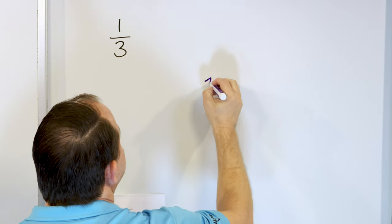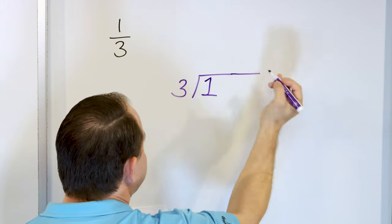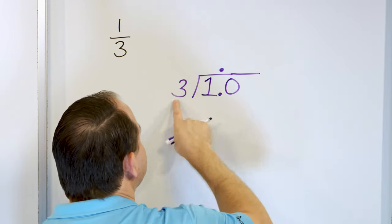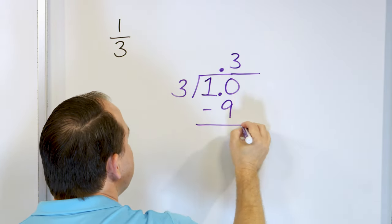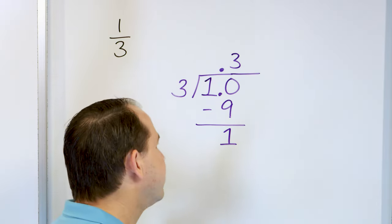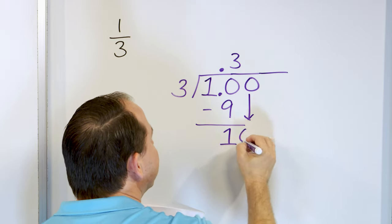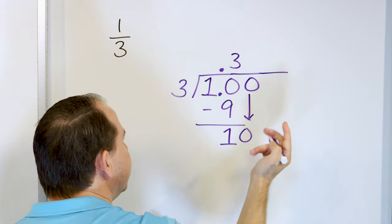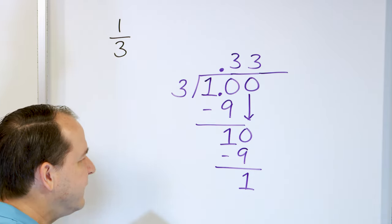One divided by 3. We ask, can 3 go into 1? No. So we drop our decimal and add a 0, and the answer will have a decimal right above. 3 times something is 10: 3 times 3 is 9, 3 times 4 is 12 — that's too big. So 3 times 3, multiply to get 9, subtract: 10 minus 9 is 1. We did not get a remainder of 0. We drop another 0 and drag it down — again a 10. 3 times 3 is 9, subtract: 10 minus 9 is 1 again. You might start seeing a pattern forming.